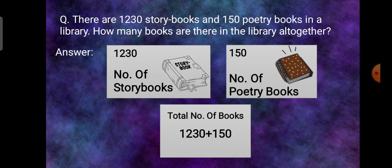Now let's do our third sum. The third question is: there are 1230 story books, 150 poetry books in a library. How many books are there in the library all together?